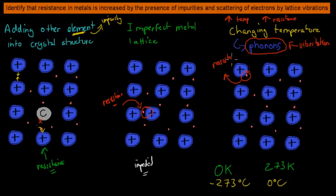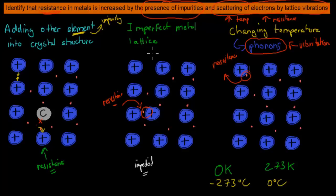To summarize: resistance in metals is increased by impurities — adding a foreign element disrupts the even spacing of positive regions, increasing the chance of electron collisions. An imperfect metal lattice also causes uneven regions that attract electrons and impede their movement. Finally, increasing temperature increases phonons, which increases collisions and resistance. When electrons collide, they lose energy, and that is resistance.